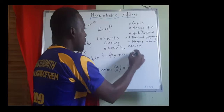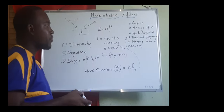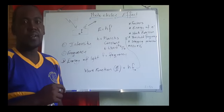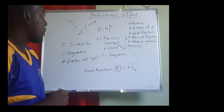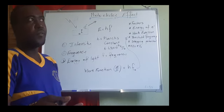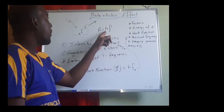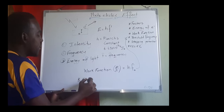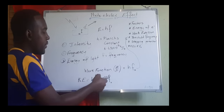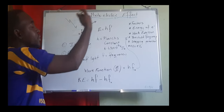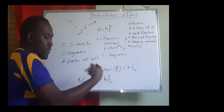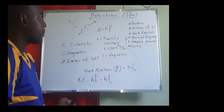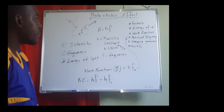f₀ is the threshold frequency, which leads us to our next term. The threshold frequency is the minimum frequency that the light emitted to the metal needs to have for electrons to actually leave the metal. Now that we have the resistive energy and the energy that the electrons have, we can find the exact kinetic energy: it's the energy supplied minus the energy the electron needs to leave the metal — the work function.